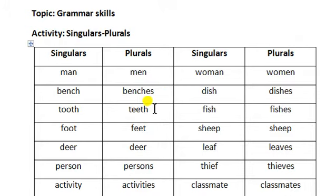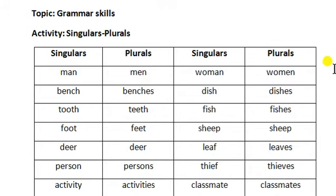We have examples like 'teeth.' When the last letters of a word are CH or SH, we add ES to make the plural. For example, 'men' and 'women' — here the ending is CH, and here also the ending is CH, so we add ES.